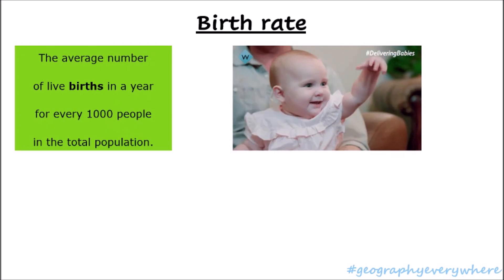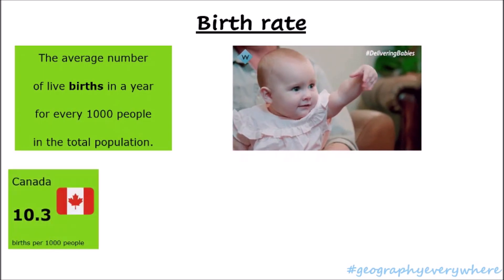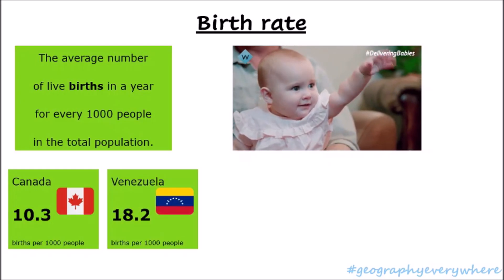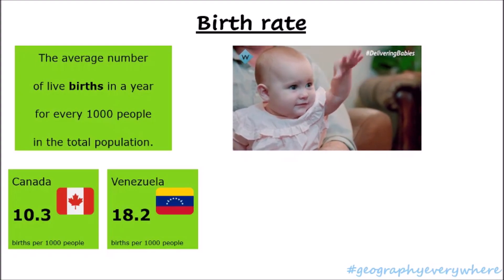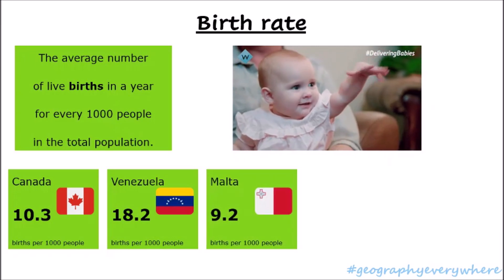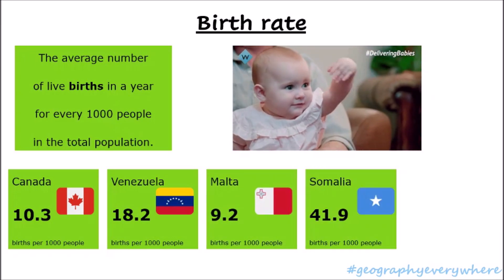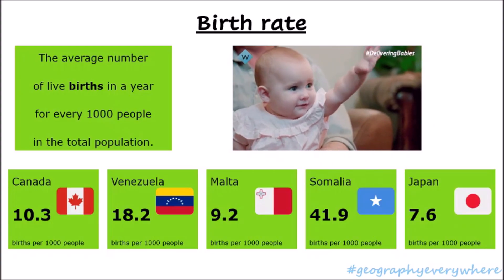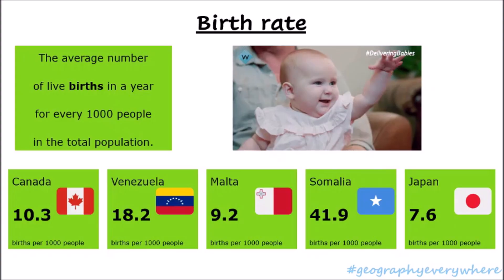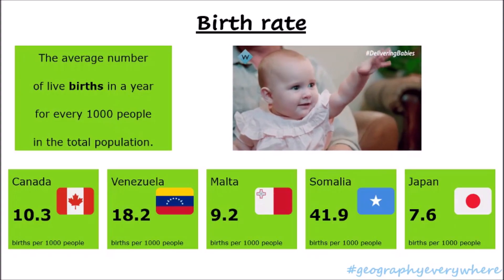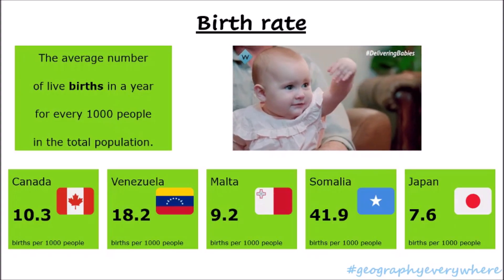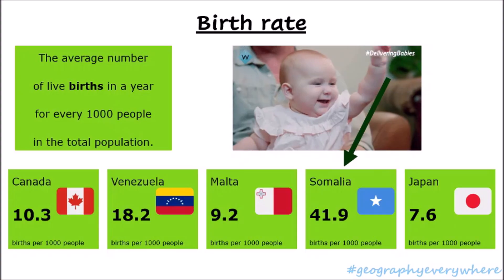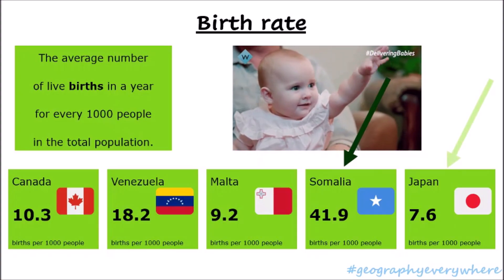Let's look at some birth rates around the world. The birth rate of Canada is 10.3 births per 1,000 people. The birth rate of Venezuela is 18.2. Malta's is 9.2. Somalia's is 41.9. And Japan's is 7.6. You can see that in each of these countries — one in every continent — the birth rate is different. The highest birth rate is Somalia with 41.9, and the lowest birth rate is found in Japan.